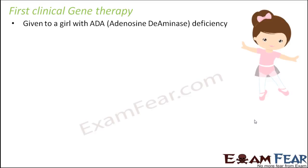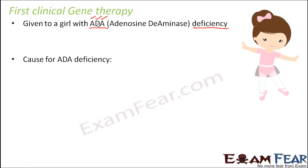The four-year-old girl was suffering from a disease called ADA deficiency. ADA stands for adenosine deaminase, which is an enzyme. ADA deficiency occurs because the gene responsible for production of ADA is deleted. Since the gene is not there, no proteins are being synthesized for ADA, and therefore ADA is absent.